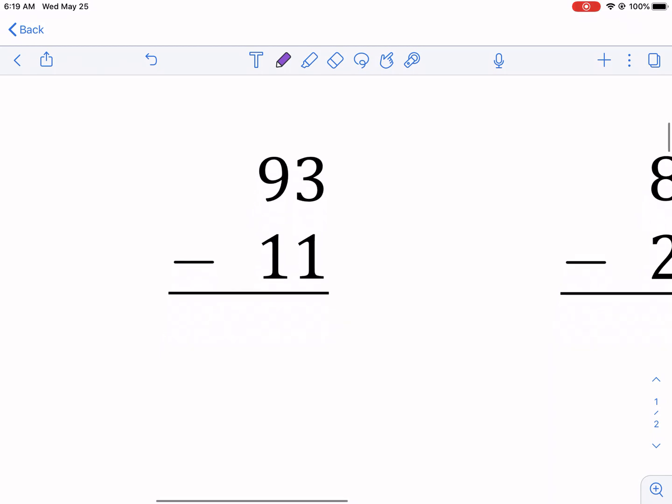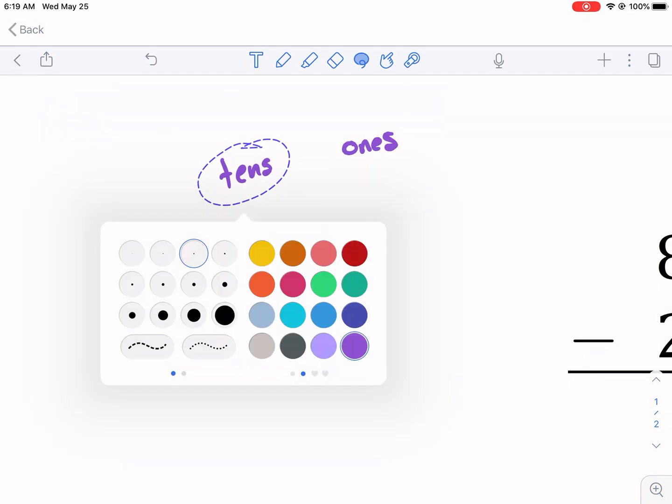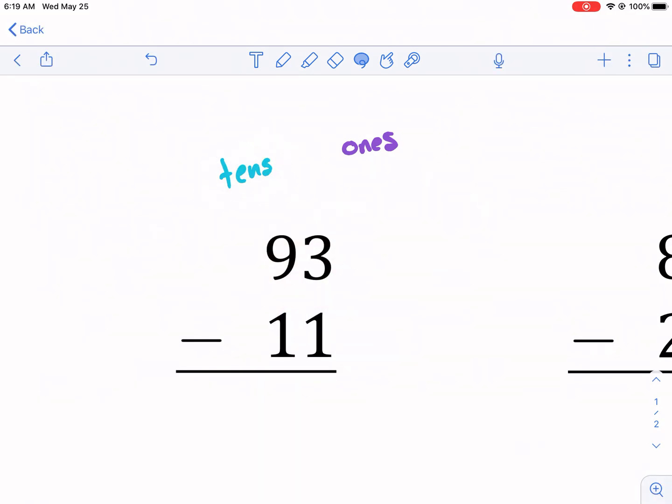We have two-digit subtraction. And what we're going to do is we need to subtract two different places. We have the tens place, and I'm actually going to change that color to blue, and then we have the ones place.